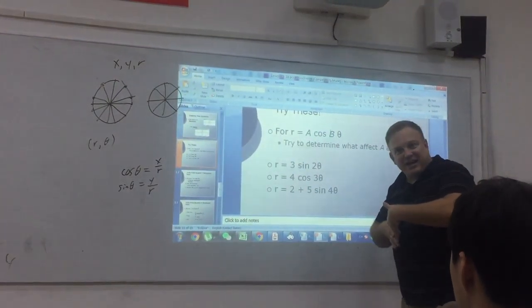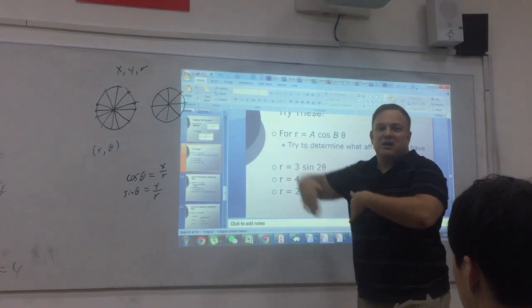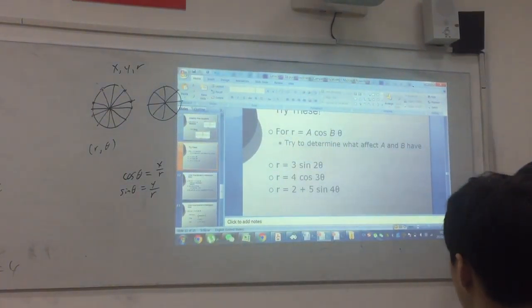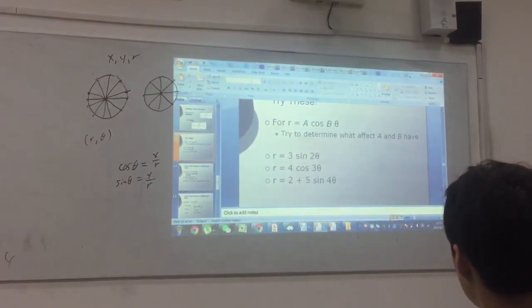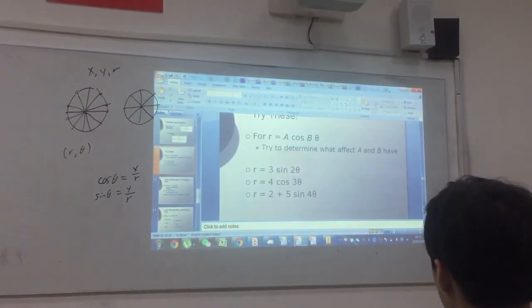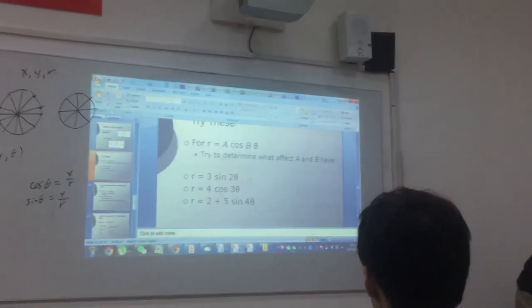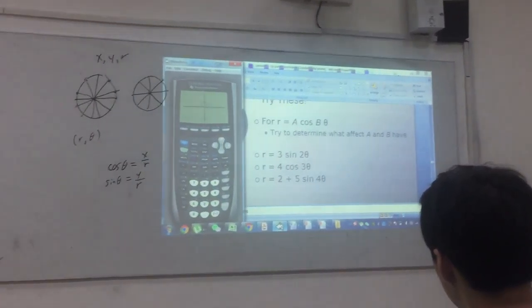So when this gets bigger, that causes us to go further away from the center. When this gets bigger, it means we fluctuate more often, right? So watch, let's go ahead and do this on the calculator. So let's start with just R equals sine of theta. Then we'll look at R equals 3 sine of theta, and then let's look at this.